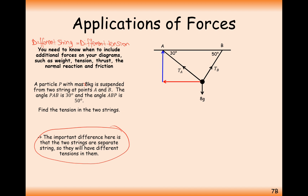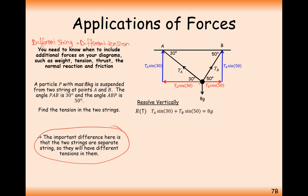For both forces we need to resolve them. Using the Z angle rule, the 30 degree side gives T_A cos 30 and T_A sin 30. For the other string, it gives T_B cos 50 and T_B sin 50. Resolving vertically, T_A sin 30 plus T_B sin 50 balances the 8g downward force. Resolving horizontally, leftward equals rightward: T_A cos 30 equals T_B cos 50.